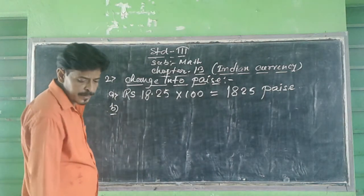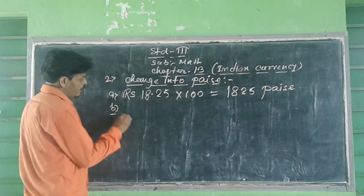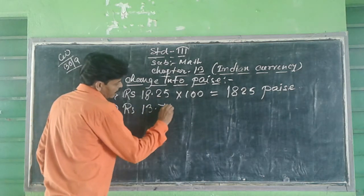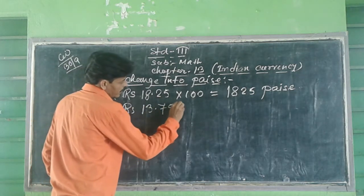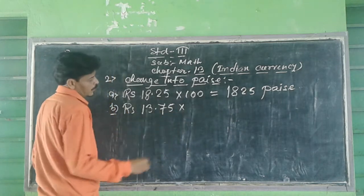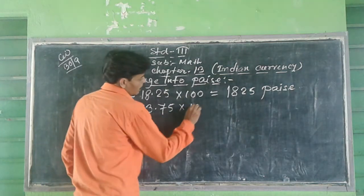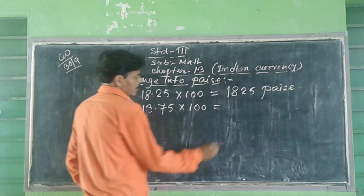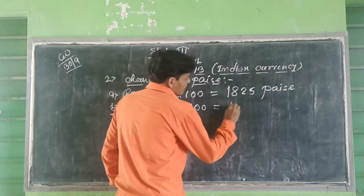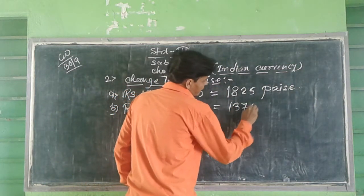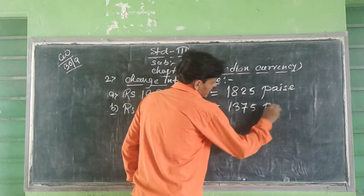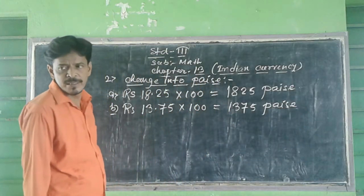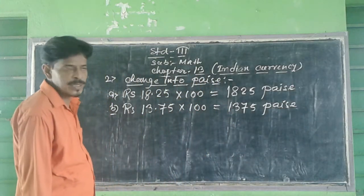Question 2b: Rupees 13.75. So, Rupees 13.75 into 100 equal to 1375 paise.